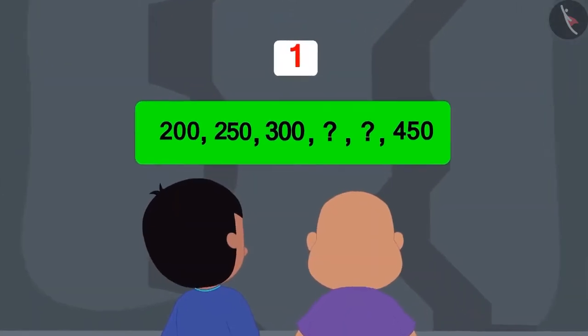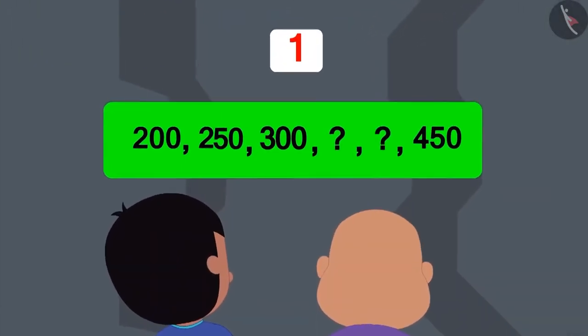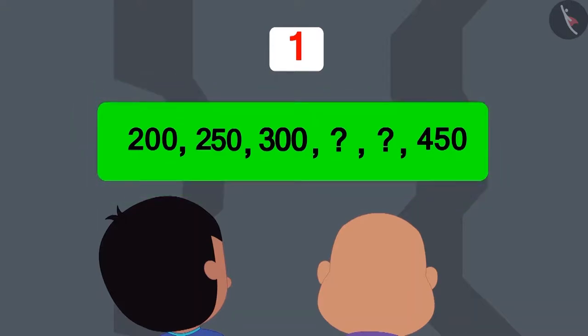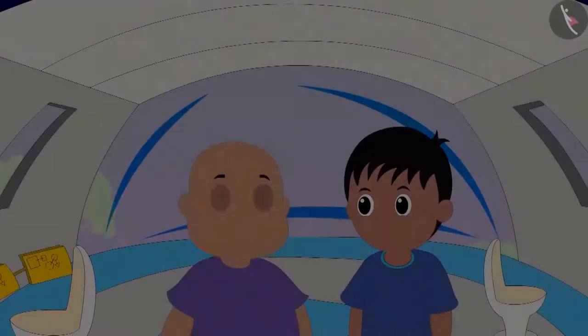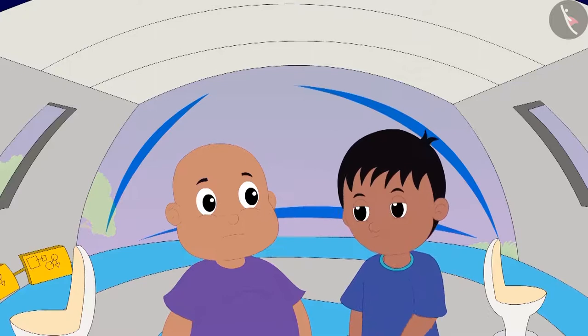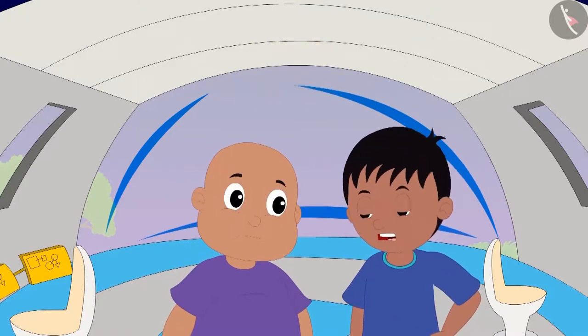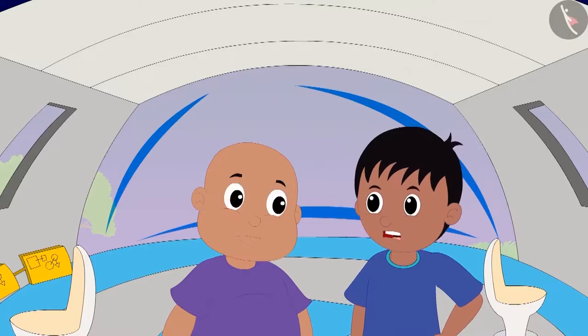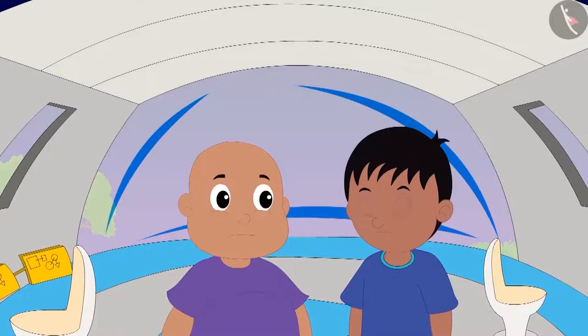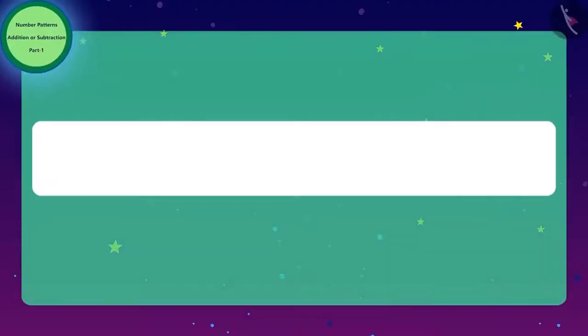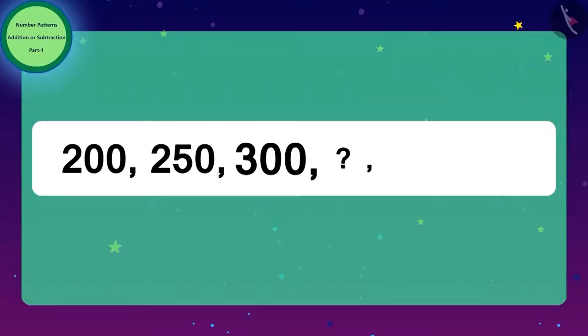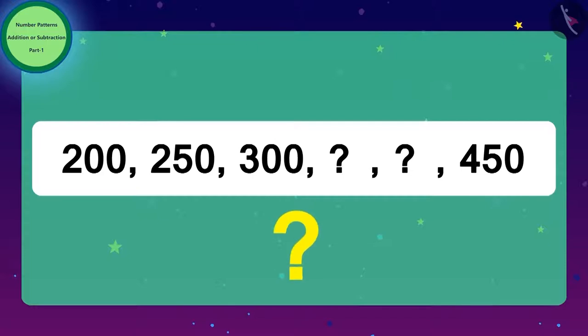Raju and Bablu saw a door in front of them on which the code was written. Raju told Bablu that he had solved Jeev's codes before. But these numbers were very large. Bablu told Raju that they should look at the numbers in order. So, what should Bablu and Raju do now?